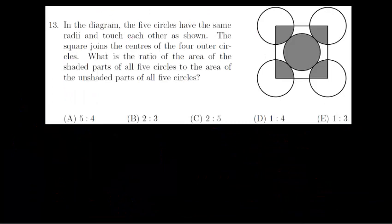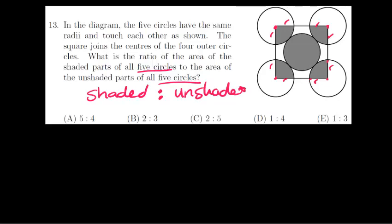Question 13: in the diagram, the five circles have the same radius, and they touch each other as shown in the diagram. The square joins the centers of the four outer circles — this is the center, this is the center, this is the center. The line from the center to the end is the radius on all of these. What is the ratio of the area of the shaded parts of the five circles to the area of the unshaded parts of the five circles?